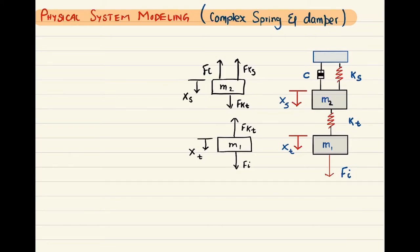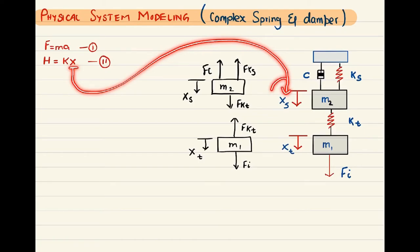Now we move to drawing the equations. We start from the simple equation F = MA, equation number one. We also use the spring constant from Hooke's law: force equals K times X, where K is the spring constant and X is displacement. This is equation number two.